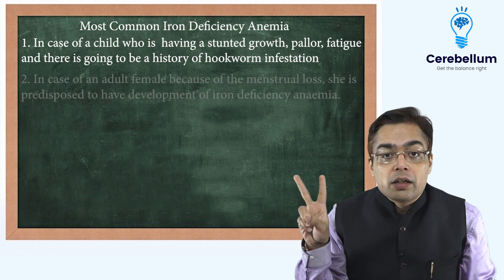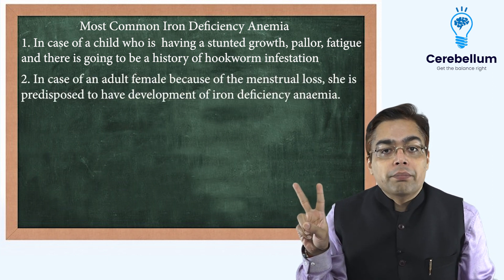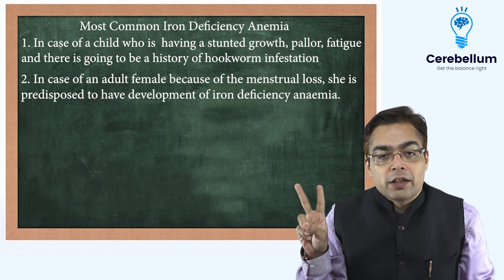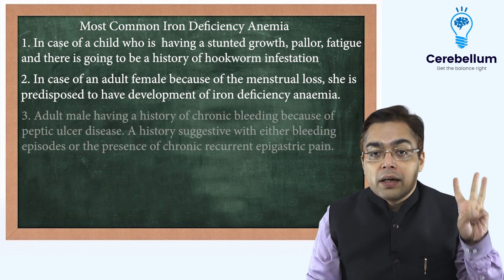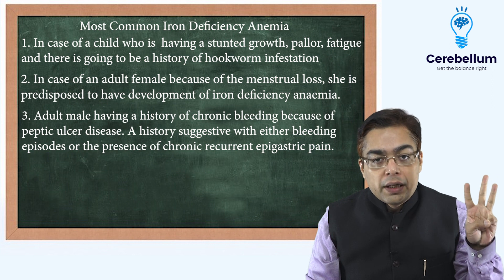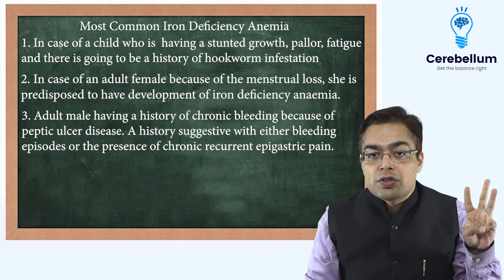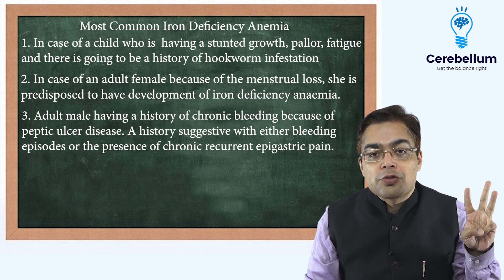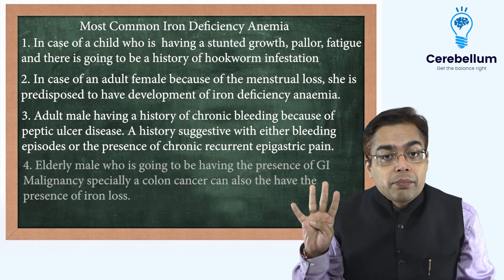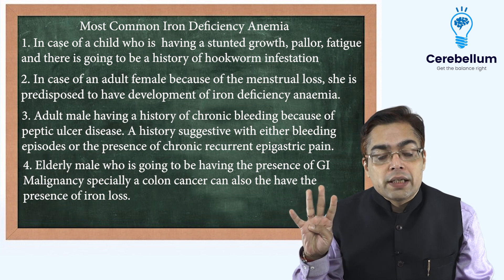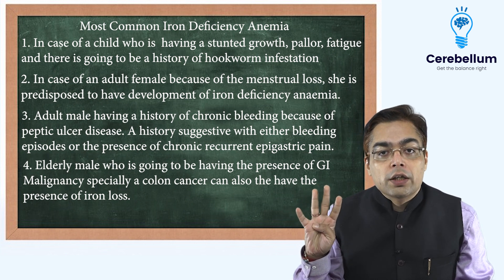In case of an adult female, because of the menstrual loss, she is predisposed to development of iron deficiency anemia. An adult male having a history of chronic bleeding because of peptic ulcer disease — a history suggested with either bleeding episodes or the presence of chronic recurrent epigastric pain. An elderly male having the presence of a GI malignancy, especially colon cancer, can also be having iron loss.